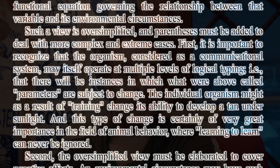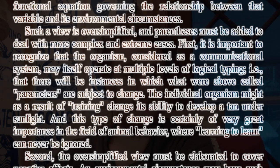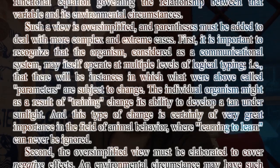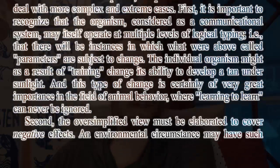First, it is important to recognize that the organism, considered as a communicational system, may itself operate at multiple levels of logical typing, i.e., that there will be instances in which what above were called parameters are subject to change. The individual organism might, as a result of training, change its ability to develop a tan under sunlight, and this type of change is certainly of very great importance in the field of animal behavior, where 'learning to learn' can never be ignored.